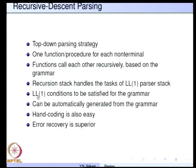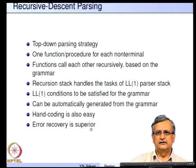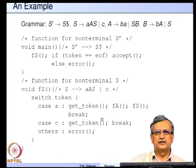The recursion stack handles the task of the LL1 parser stack, so no separate stack is necessary. The same LL1 conditions need to be satisfied for the grammar. Just like LL1 parsers, recursive descent parsers can also be generated automatically from the grammar, and hand coding is also very easy. The advantage is that error recovery in recursive descent parsers is superior to that of LL1 parsers.